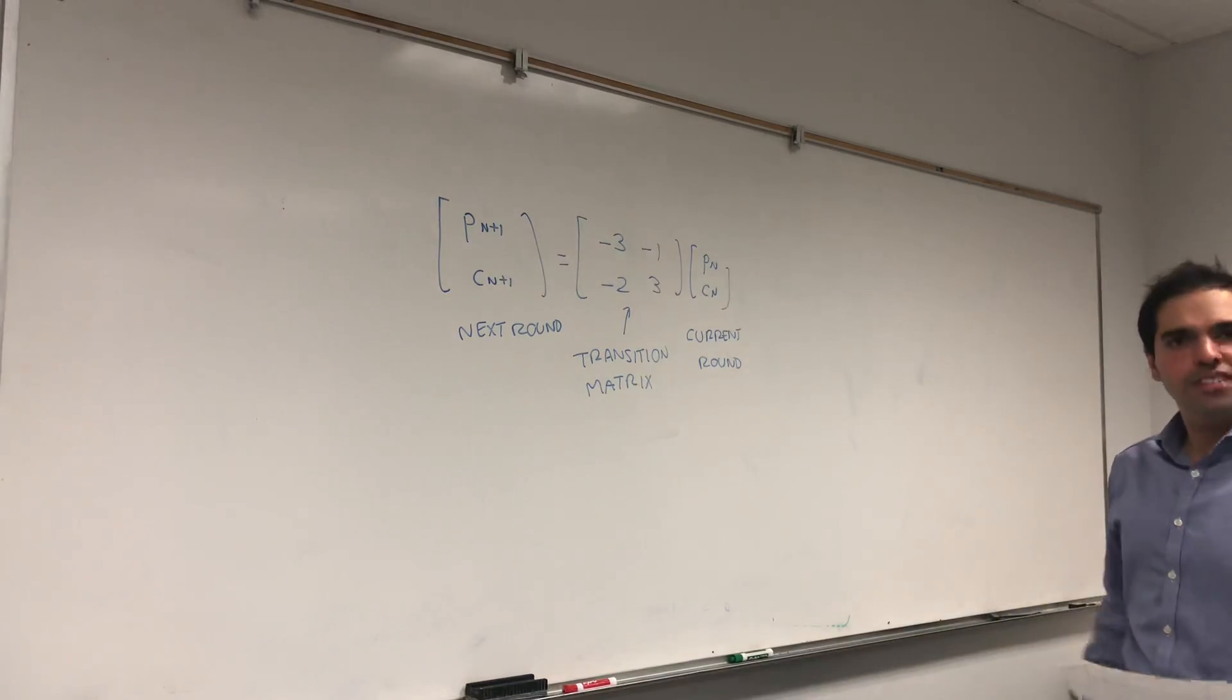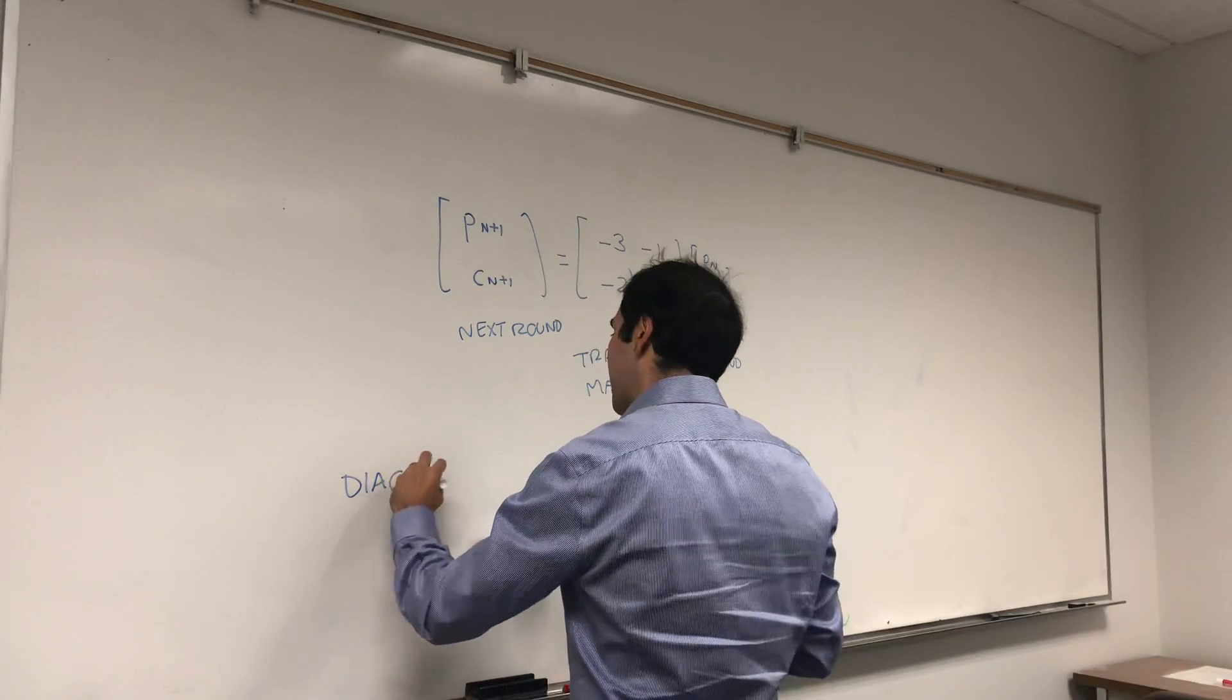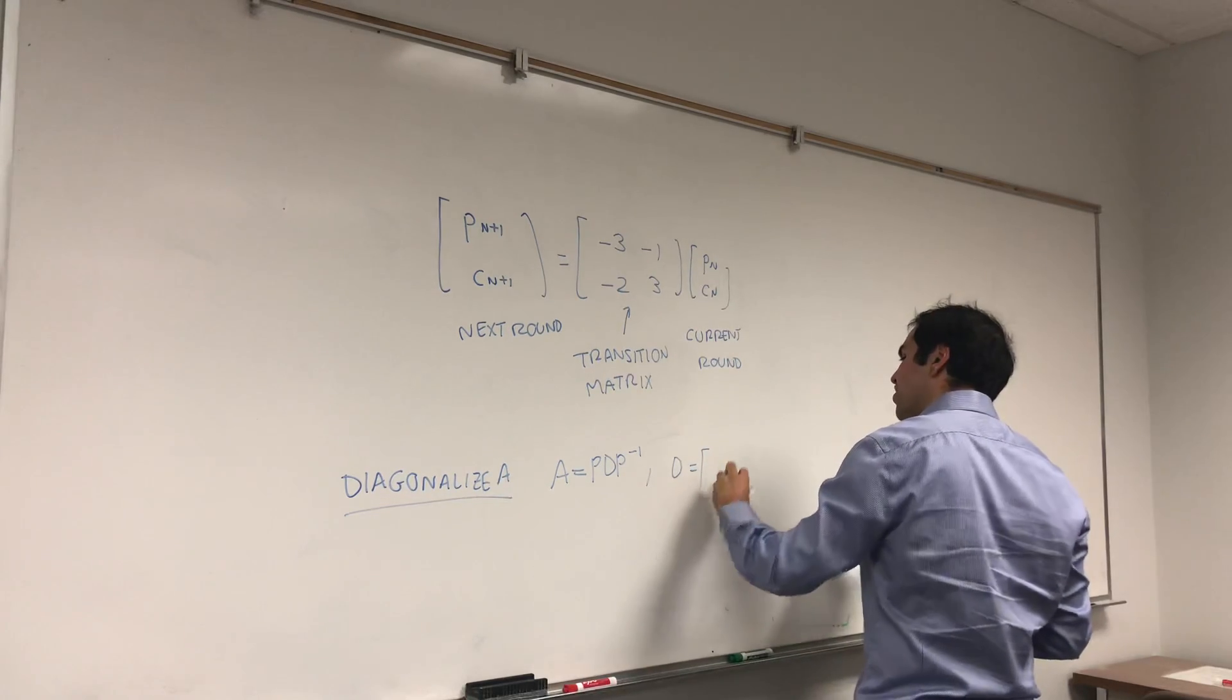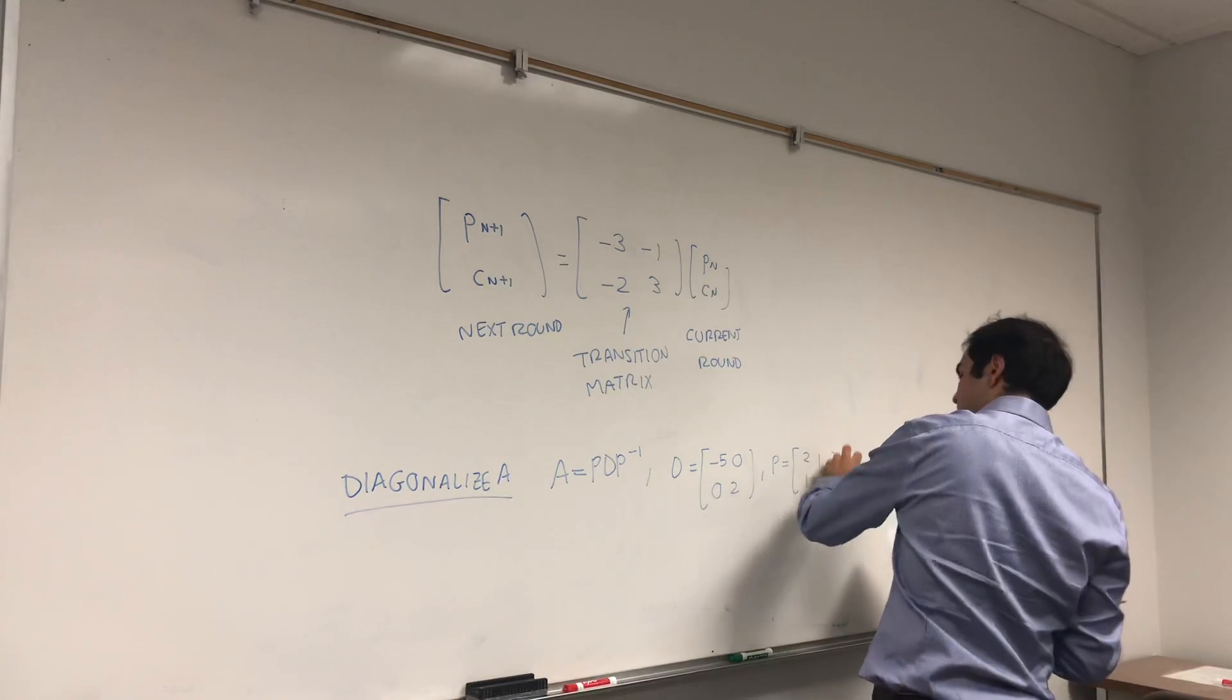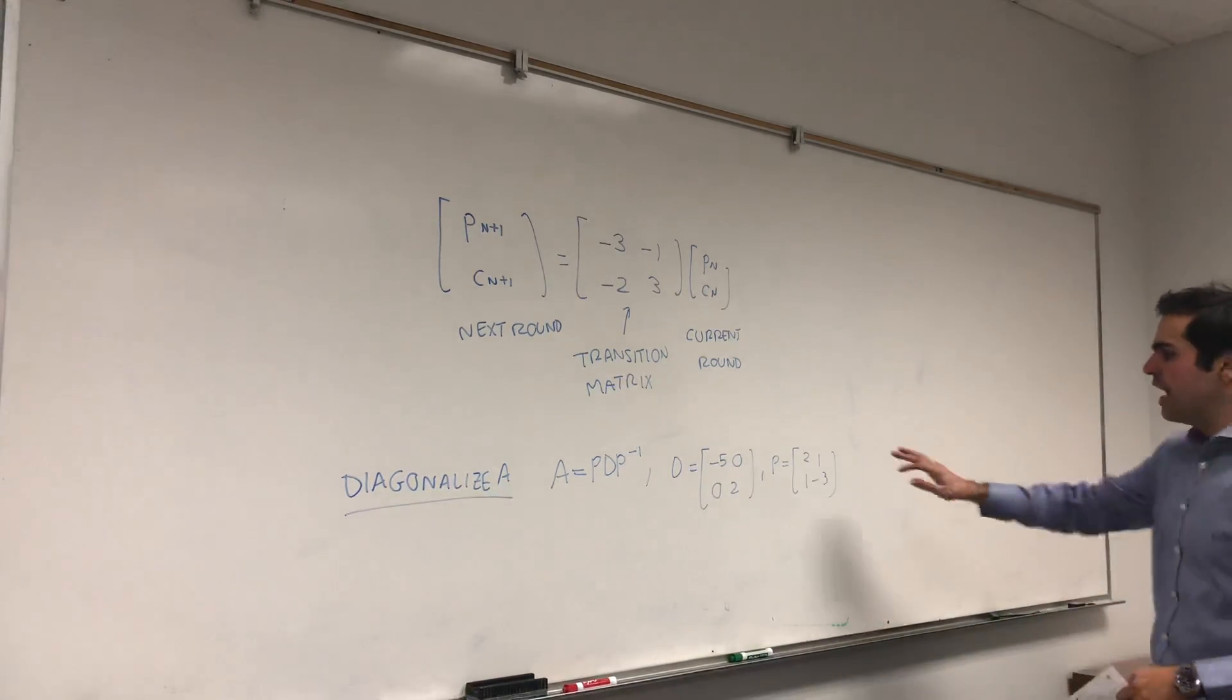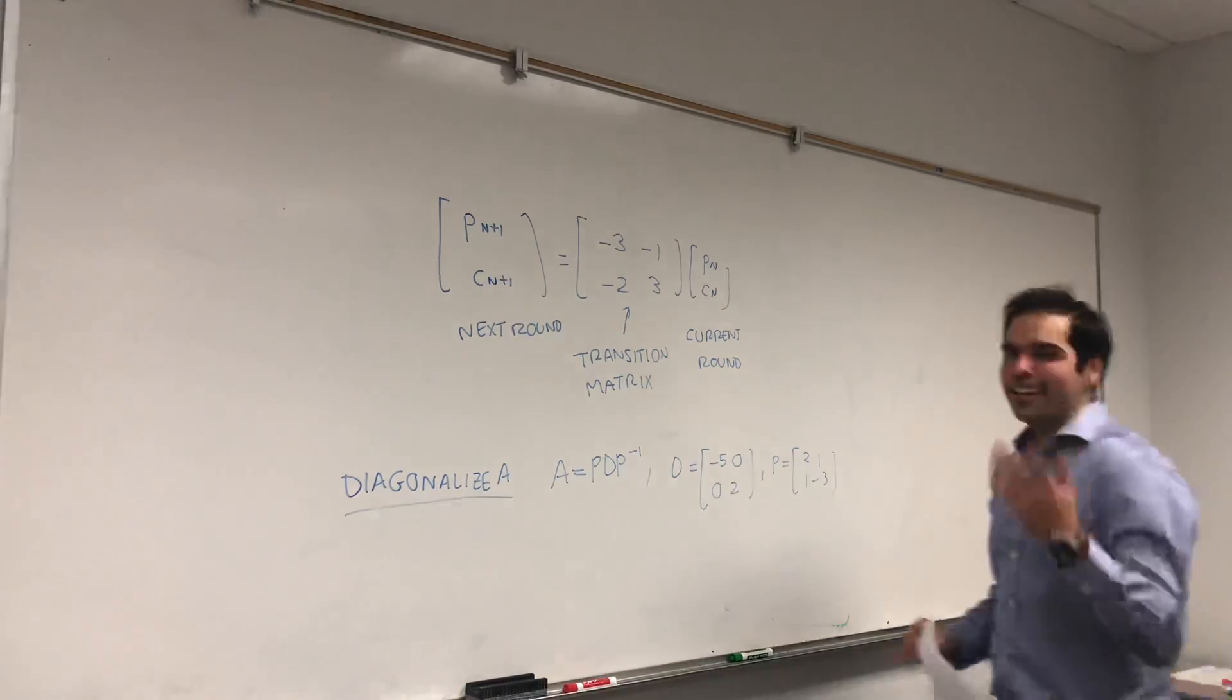And in general, this is a difficult problem. But now we know linear algebra. In particular, we know how to diagonalize this matrix. So, you'll see why this is useful. So, diagonalize A. So, it turns out A is PDP inverse. Where D is the diagonal matrix minus 5, 0, 0, 2. And P is 2, 1, 1, minus 3. And, again, I've done several videos on how to diagonalize a matrix. If you find the eigenvalues, you find minus 5, 2. And if you find the eigenvectors, the one corresponding to minus 5 is 2, 1. The one corresponding to 2 is 1, minus 3.